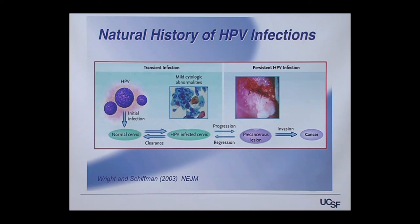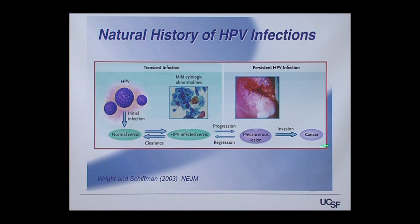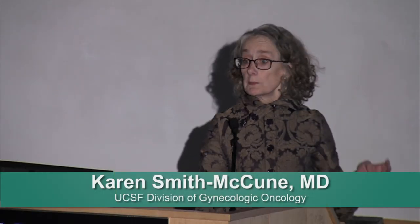In a lower percentage of cases, the infection doesn't clear and can progress. The virus changes behavior — instead of making viral copies, it stimulates cervical cells to grow abnormally, creating a precancerous lesion. These can also go away on their own if the immune system responds. But if the precancerous lesion persists for 5 to 10 years, it can progress to cancer. Screening picks up these intermediate stages before cancer has a chance to develop.